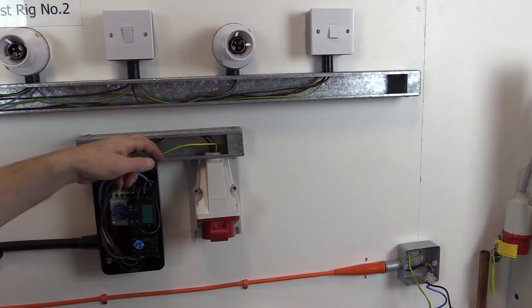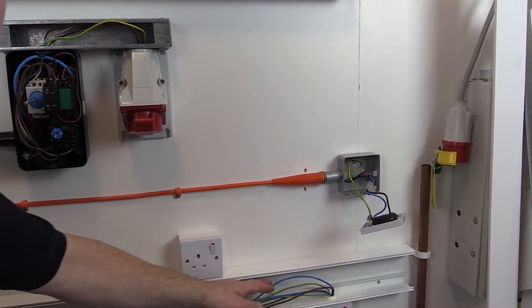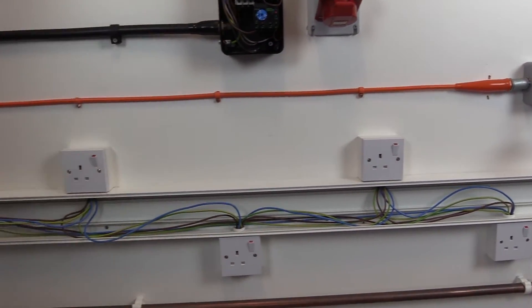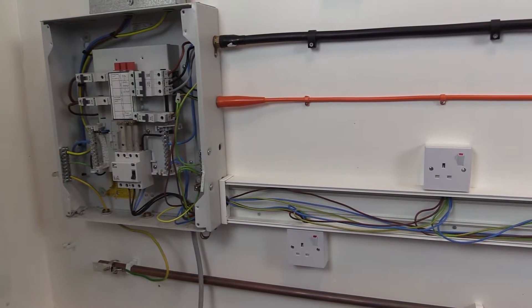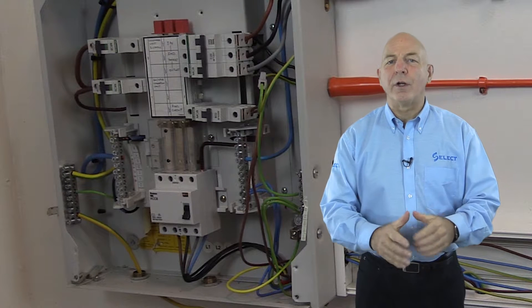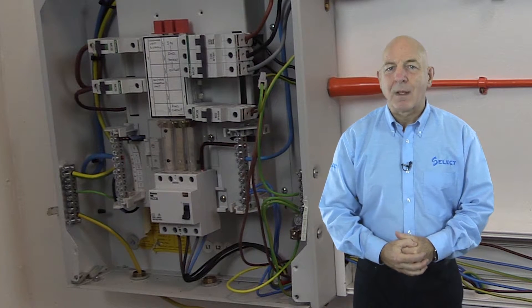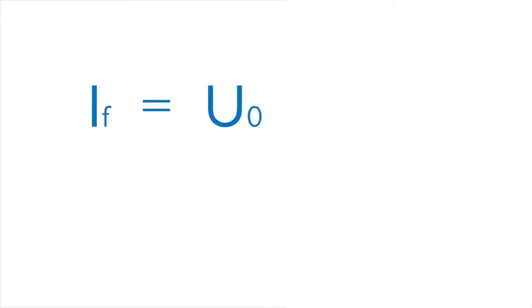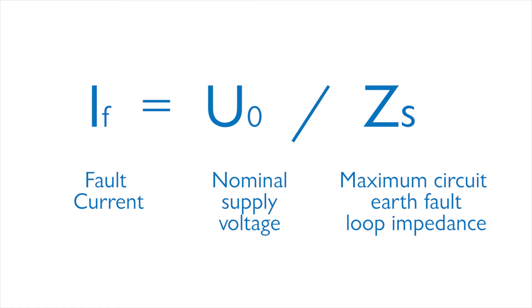These provide a means of connection to earth for the exposed conductive parts of installed equipment and form part of the low impedance path, which is known as the earth fault loop impedance. The amount of current flowing in the circuit during an earth fault condition is dependent on the earth fault loop impedance and can be determined using the formula IF = U0 / ZS, where IF is the fault current, U0 is the nominal supply voltage, and ZS is the maximum circuit earth fault loop impedance.